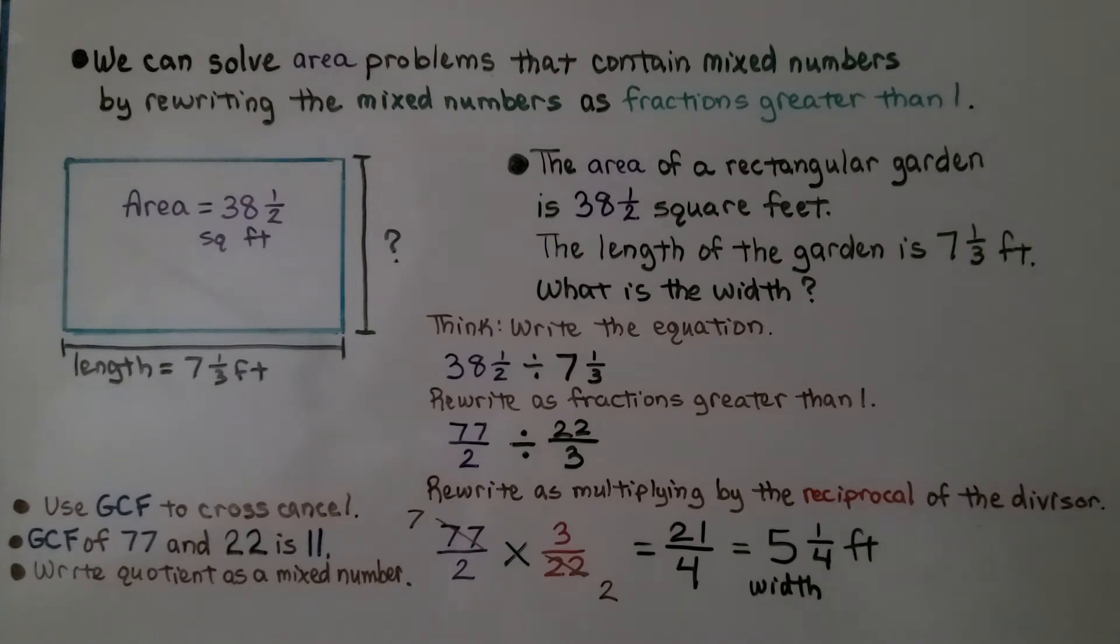We write the equation. It's a division equation. 38 and a half divided by 7 and 1 third. We rewrite as fractions greater than 1.